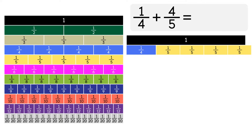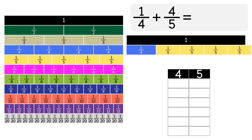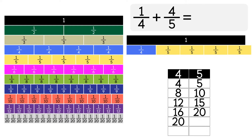To find the common denominator, we'll use multiples. First we'll find the multiples of 4: 4, 8, 12, 16, and 20. Now let's write out the multiples of 5, listing them until we get a common multiple with 4: 5, 10, 15, and 20. So 20 is the common multiple.